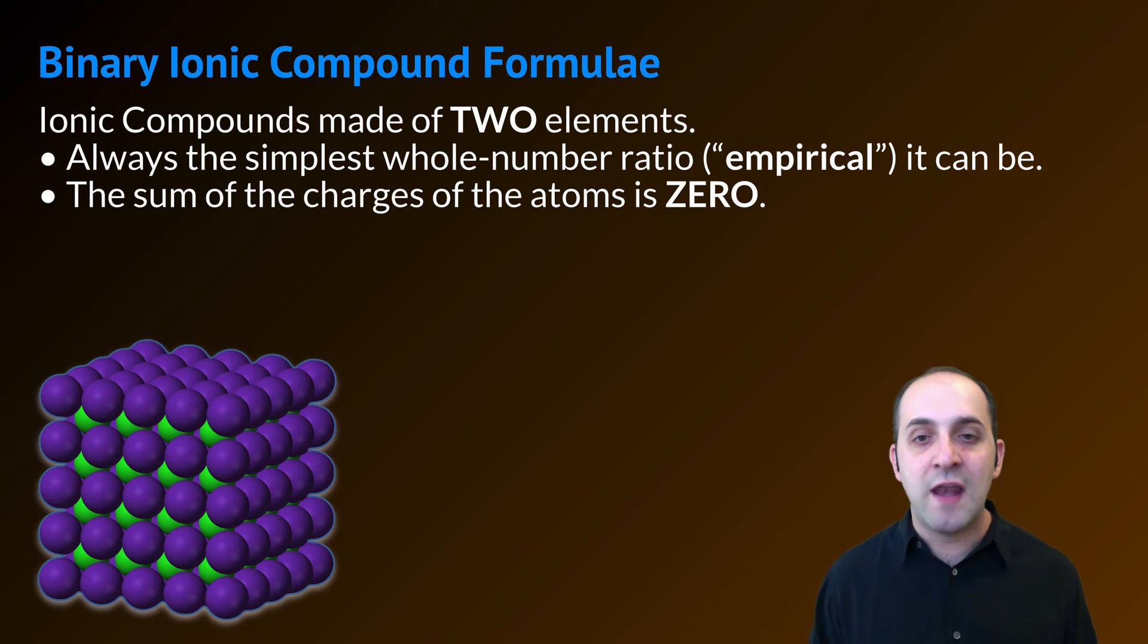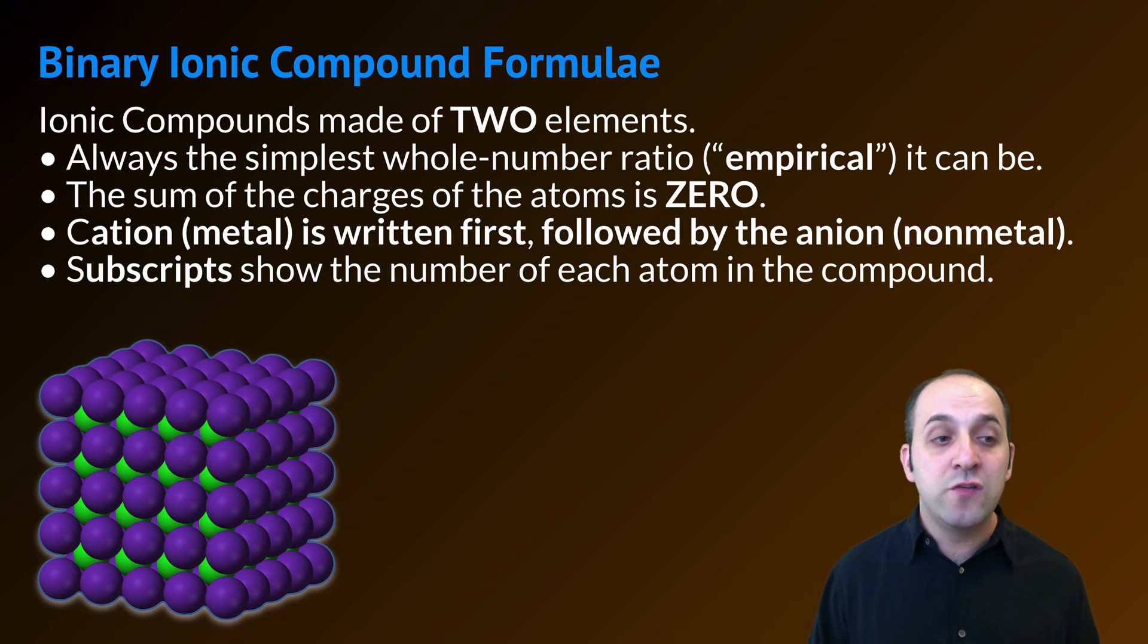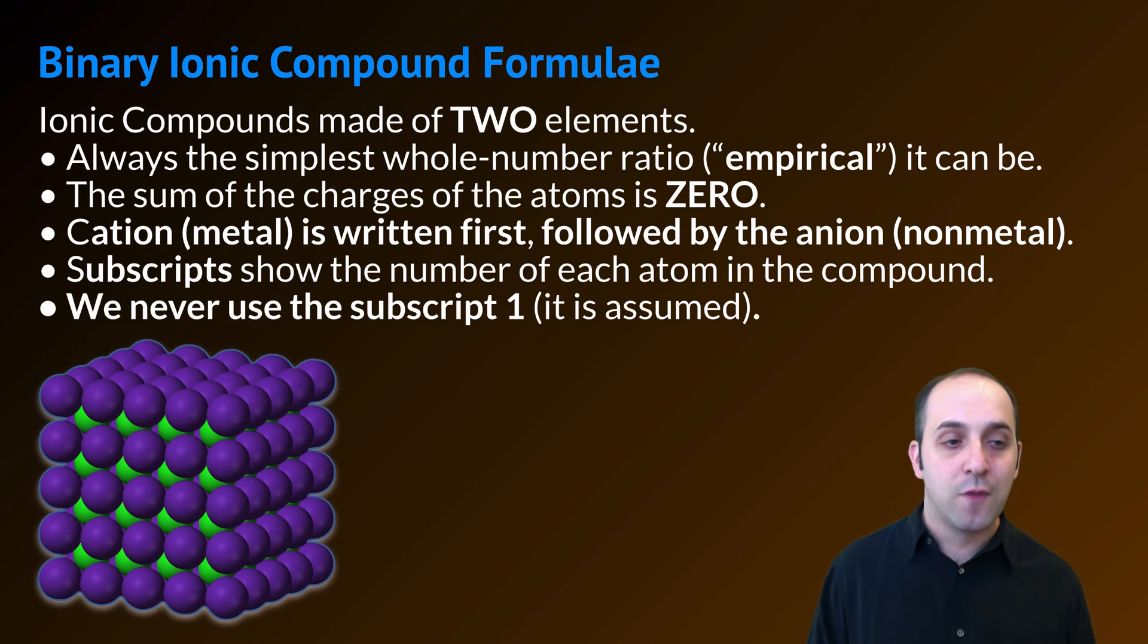The sum of the ionic charges in our atoms has to equal zero in the formula. The cation or the metal always has to be written first, followed by the anion or the nonmetal. And we're going to use subscripts, small numbers below and to the right of each atom, to indicate how many of each atom is in the compound's formula. Finally, we're never going to use the subscript one. We just assume it. We wouldn't be writing the element symbol if there wasn't at least one of them in it.